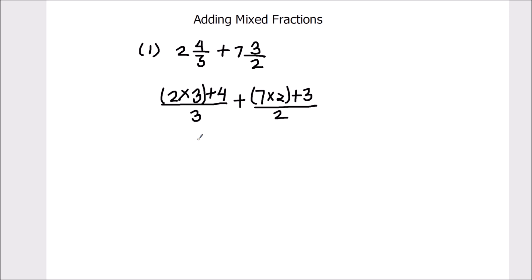So 2 times 3 is 6, 6 plus 4 is 10. This is 10 by 3, plus 7 times 2 is 14, 14 plus 3 is 17, 17 upon 2. Now the fractions are converted into improper fractions.